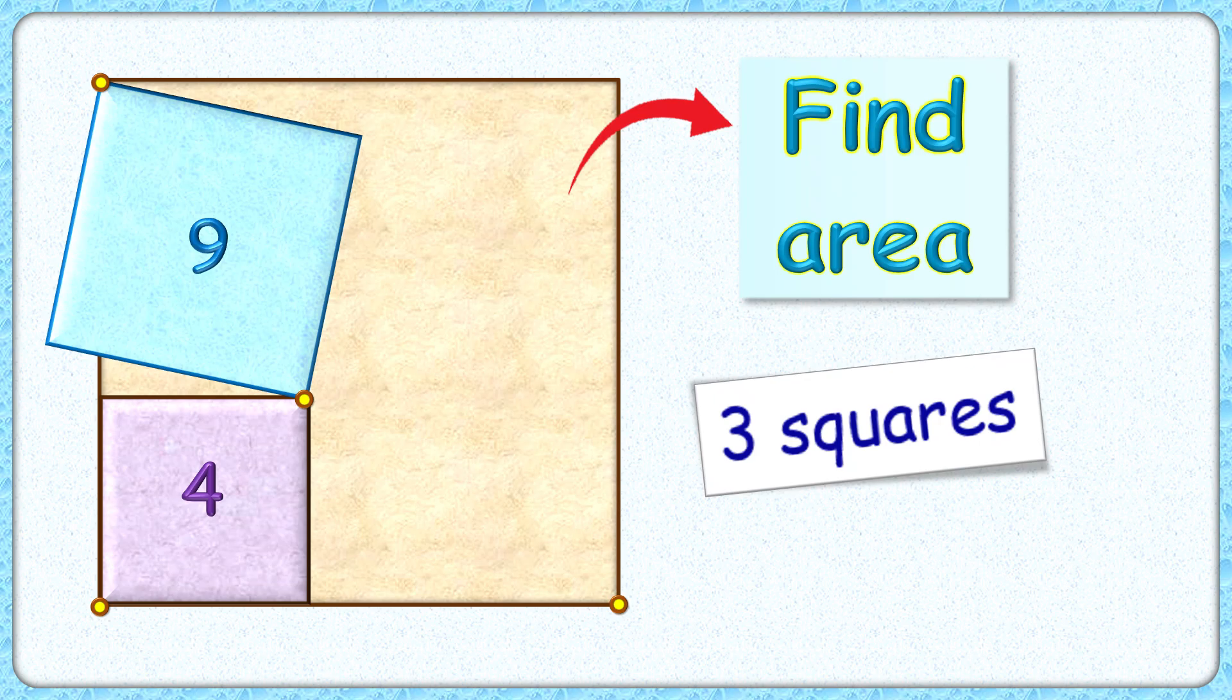Welcome everyone to this interesting question. We are given three squares. The area of this purple square and blue square is four and nine centimeters squared. The exciting part is with this limited data we have to find the area of this brown square.